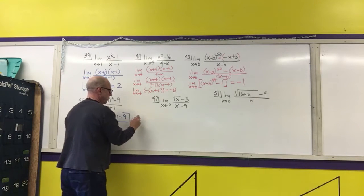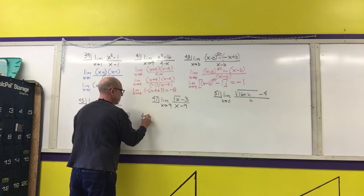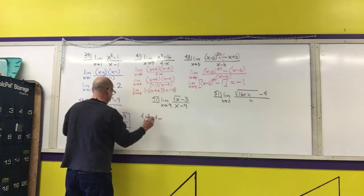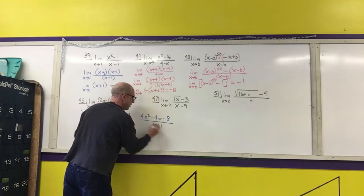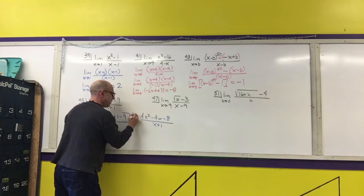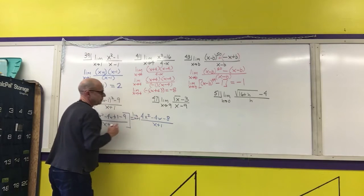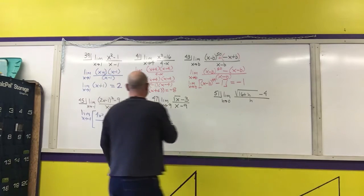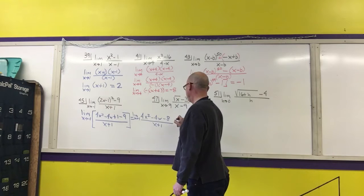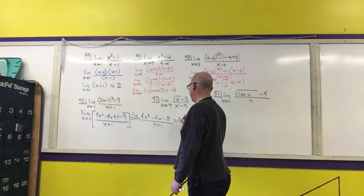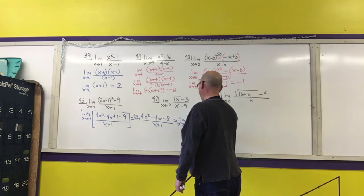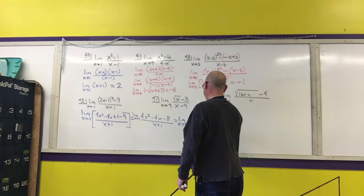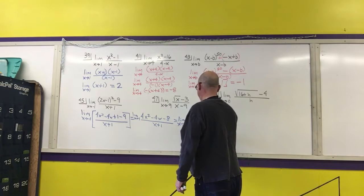And now if I want to continue, I get 4x squared minus 4x minus 8 over x plus 1. And I still have to take the limit as x approaches negative 1. Notice that I have a 4 in every term in the numerator.